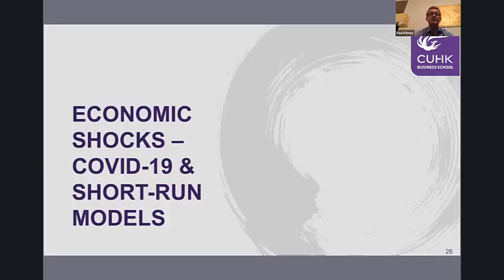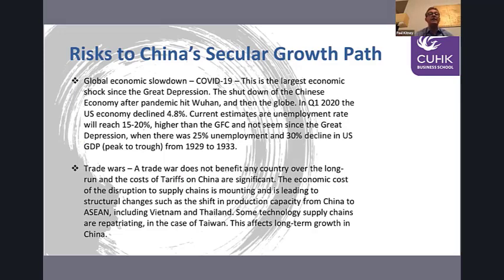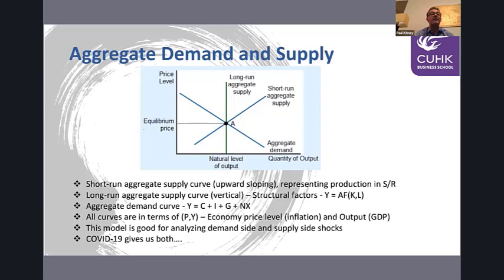Now we're into the short-term models. There's a lot of theory that comes into this, so let's try to give a heuristic understanding. The two big risks to China's growth path are obviously the COVID-19 event — we've seen over a 6% decline in economic growth in Q1 — and also the trade war and disruption to supply chains, which is an ongoing factor not likely to be solved soon. Unemployment is already extraordinarily high — of the order of magnitude of the Great Depression — though I don't think it will be like the Great Depression because this is a deliberate shutdown of production.